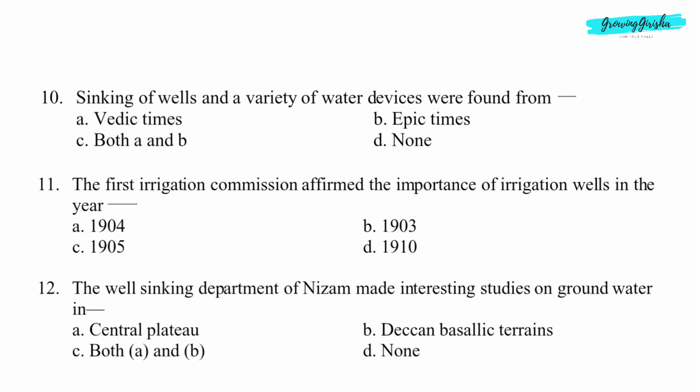Question 10. Sinking of wells and a variety of water devices were found from dash. Option A: Vedic times.